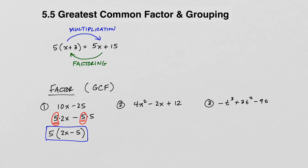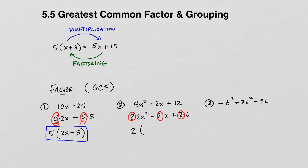In our next example, we have three terms and we would like to factor out the greatest common factor. Notice that all three terms have an even coefficient, meaning they are all divisible by 2. So 4x squared can be thought of as 2 times 2x squared, 2x is 2 times x, and 12 is 2 times 6. The greatest common factor is 2, and if we pull this out, we get 2 times the quantity 2x squared minus x plus 6.